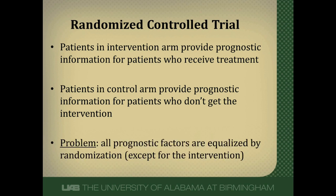The problem with prognostic information from randomized control trials is that it's limited — limited by the most powerful thing in study design, which is randomization. Randomization has equalized the prognostic factors between the two groups. So in a cancer RCT, just as many patients with stage 1 cancer would be in the intervention arm as in the control arm; stage 2 would be equalized, and so on. This limits the number of prognostic factors we can examine — essentially we can only look at one prognostic factor: the intervention itself.